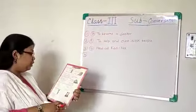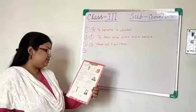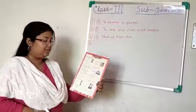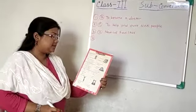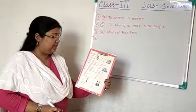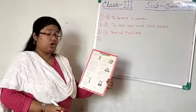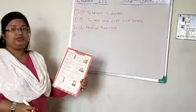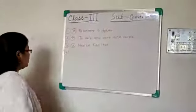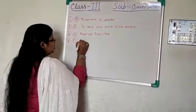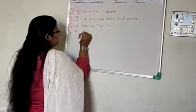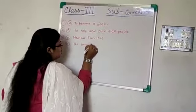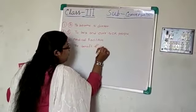Question number 4: we always do social service for — A, the benefit of relatives; B, the benefit of ourselves; C, the benefit of mankind; D, the benefit of our friends. So it should be the benefit of mankind. I go for option C: the benefit of mankind.